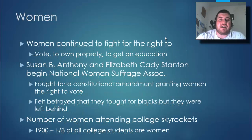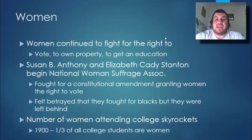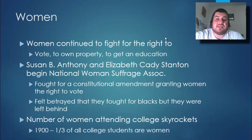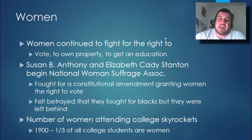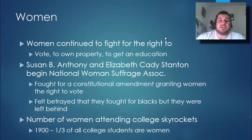Women continued to fight for the right to vote, to own property, and to get an education. On the state level they were starting to gain the right to vote — Wyoming became the first state to grant women the right to vote in 1869. Susan B. Anthony and Elizabeth Cady Stanton began the National Woman's Suffrage Association, fighting for a constitutional amendment granting women the right to vote. They felt betrayed that the 15th Amendment gave blacks the right to vote but not women. During this time the number of women attending college skyrocketed — one-third of all college students were women by 1900, compared to over 50% today.